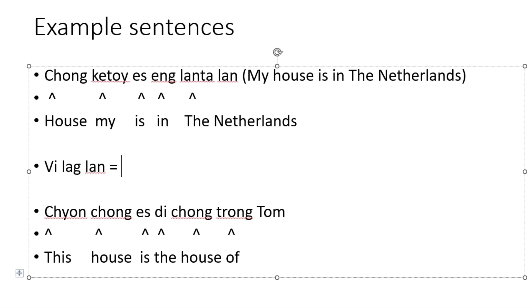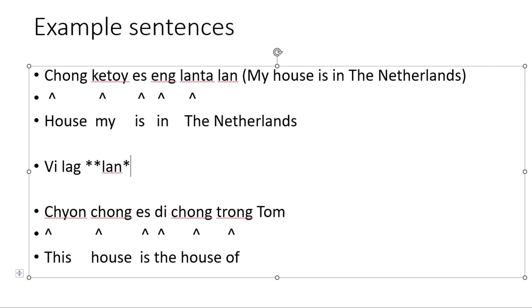VILAGLAN is Dutch, meaning the language of the Netherlands. So you just put LAN after everything relating to the country.